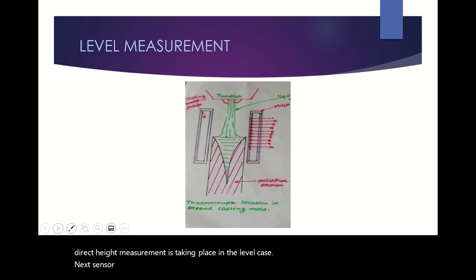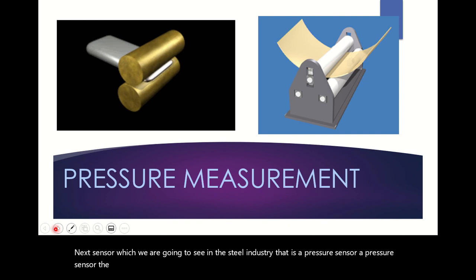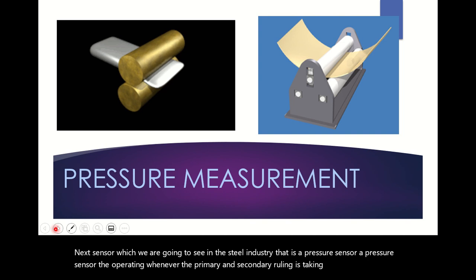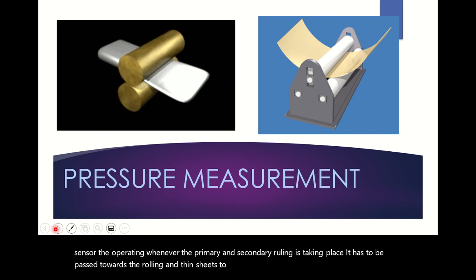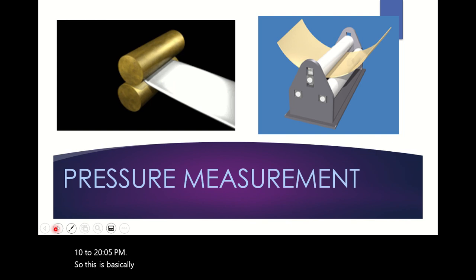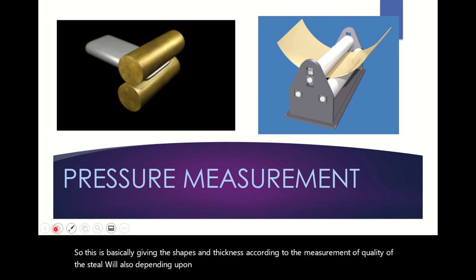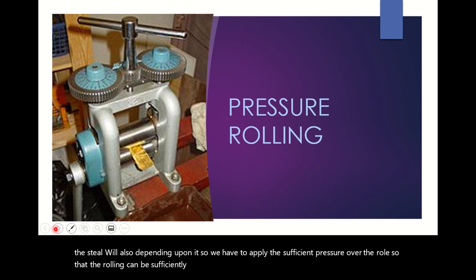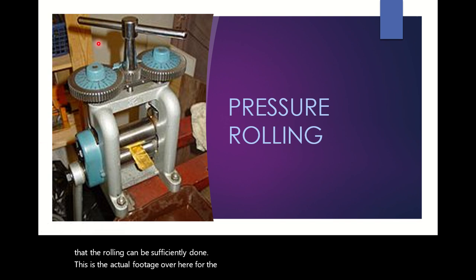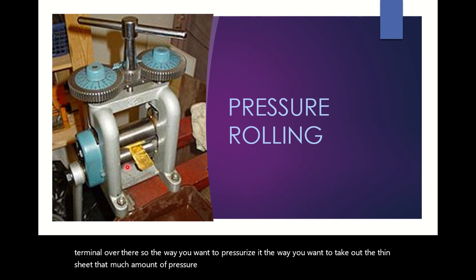The next sensor is a pressure sensor. Whenever primary and secondary rolling takes place, the material has to be passed through the rolls to produce thin sheets. The operating pressure range is 10 to 25 psig. The pressure determines the shape and thickness, and therefore the quality of the steel. Sufficient pressure must be applied over the rolls for rolling to be done properly. As shown in the actual footage, a handheld terminal is used — you can set the desired pressure to produce thin sheets, or it can be automatically actuated.